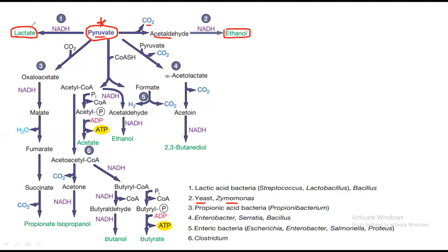The third type produces propionate/isopropanol, a special fermentative product. Pyruvate can be converted through oxaloacetate, malate, fumarate, and succinate, and at last converted into propionate/isopropanol, which gives flavor to our food. It can also take a different pathway — converting pyruvate into acetyl-CoA and then into acetone and isopropanol. So isopropanol can be produced by two different pathways, and this type of fermentation is performed by propionic acid bacteria.